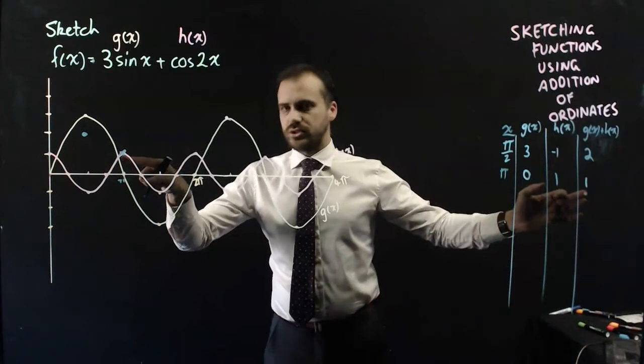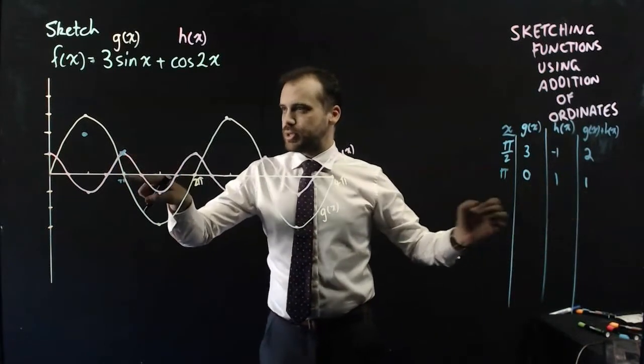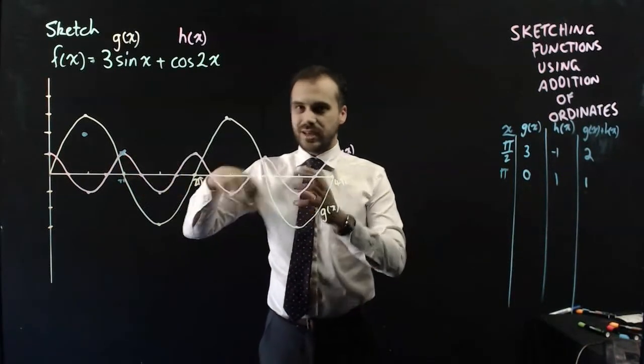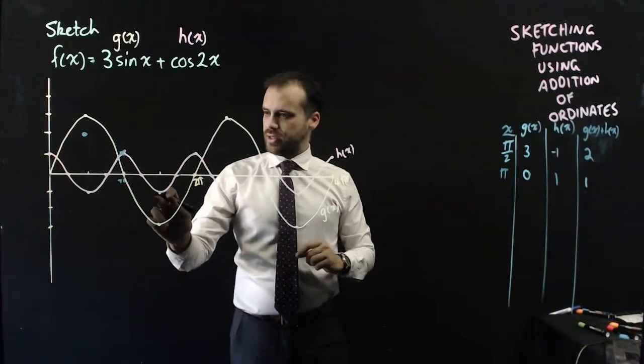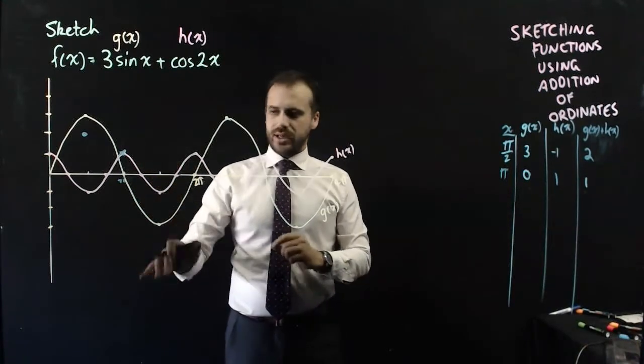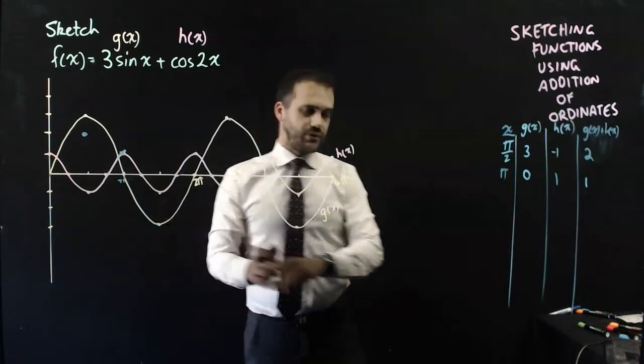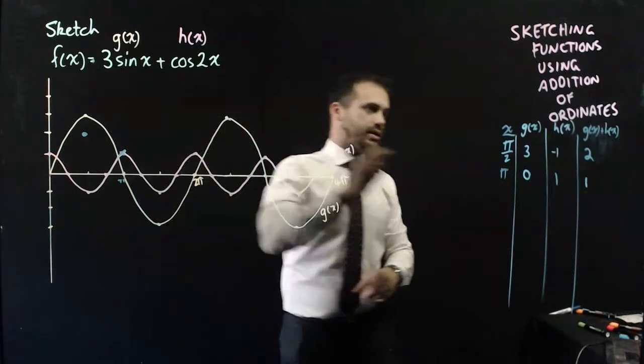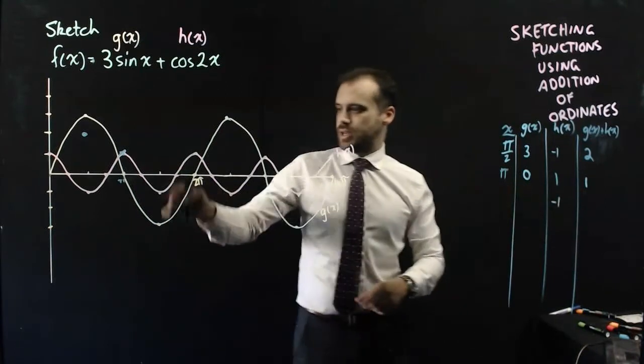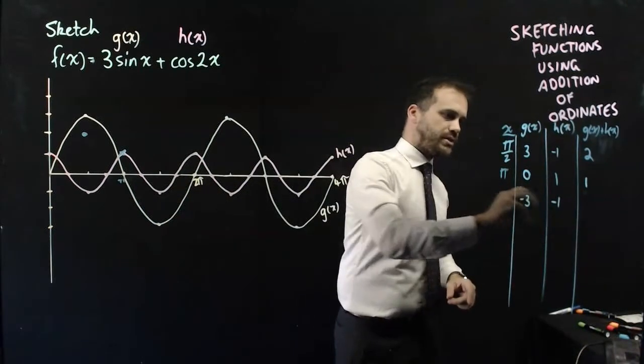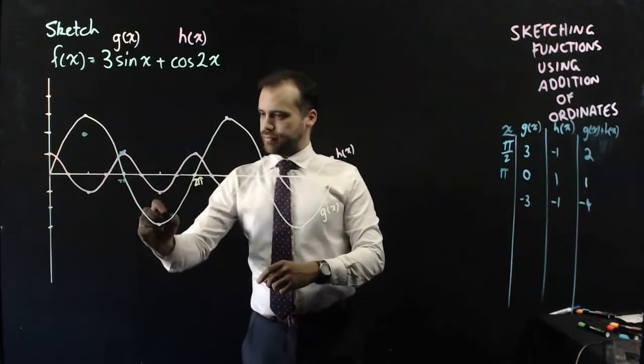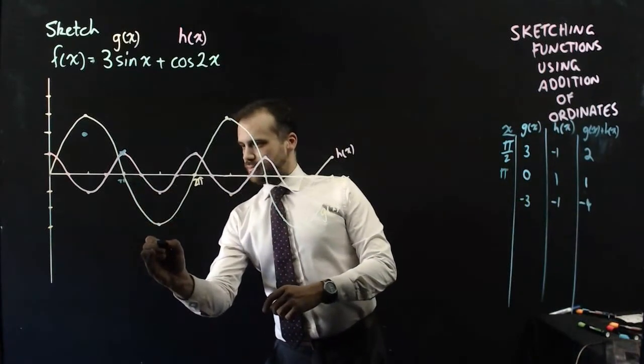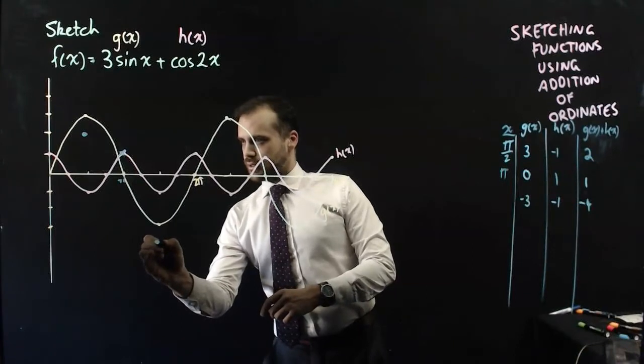Now, it's interesting that it's sitting on top of that pink one, but that's because the g(x) has nothing to add to it. It's a 0 there. Alright, moving over to here, you can see they're lining up, right? So we've got like a -1 and a -3. Negative 1 for the h(x), -3 for the g(x). We get -4 here. Negative 4, which is down about here.